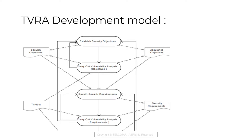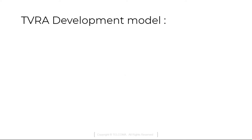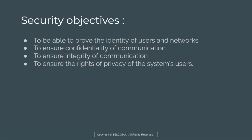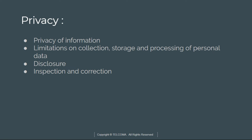In the TVRA development model, we require to establish security objectives, carry out analysis, specify all the security requirements, and design a system. The control and information security objectives include the ability to prove the identity of users, confidentiality, integrity, rights of privacy, and privacy of information — meaning limitation on collection, storage, and processing of personal data, inspection, and correlation.